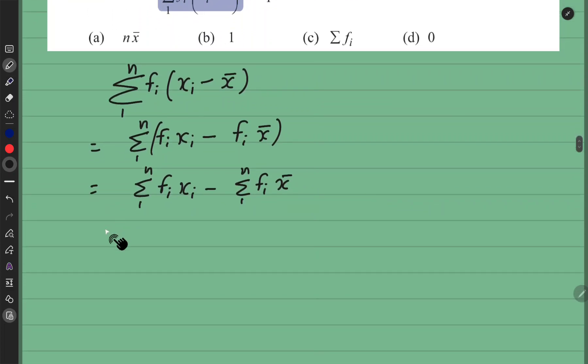Thik hai? Chalou. Aba aga kaise solve karayenge isko? Dekhene. First waale me kuch nahi karna haamko. Summation 1 to n fi xi minus. Ye joh x bar hai. Ye eek fix value hai. Isme i nahi ah raha hai. I nahi ah raha means isko summation ke outside leke jaa sakti hai. Tho ye aya x bar. Or yehaan ahi summation 1 to n fi.